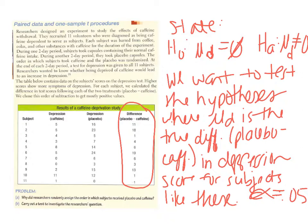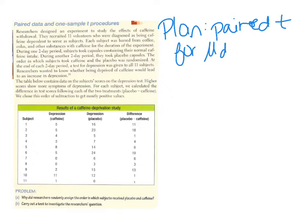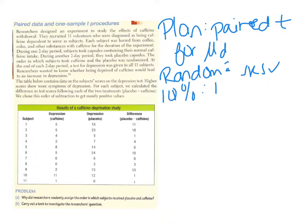Moving on to the plan part, I need to say what test I'm going to use. I'm going to use a paired T for the mean difference. Then I check my conditions. For the random condition: it is an SRS, so that's met. For the 10% condition: remember we always do random and 10% regardless of mean or proportion. There are probably more than 110 caffeine-dependent people like this. Also, the 10% condition becomes irrelevant if you're not sampling from the entire population — we just selected these 11 people.